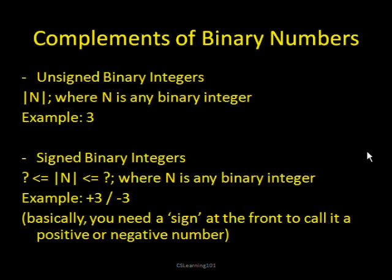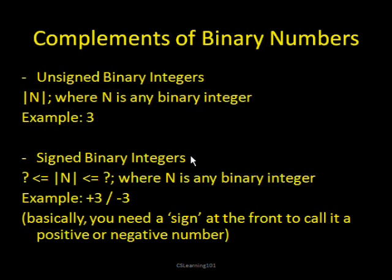There are some other terms about binary numbers and different ways to use them to represent something. Unsigned binary integers are what we've been using so far — the number is unsigned and can represent any binary integer greater than or equal to 0, for example the number 3. Signed binary integers are a little different because you need a sign at the front to call it positive or negative. The digit at the very front is the sign, so you could represent either positive 3 or negative 3, which can be useful in programming or computer architecture.